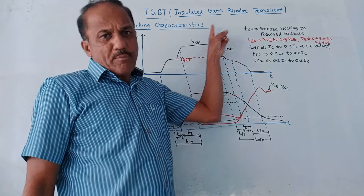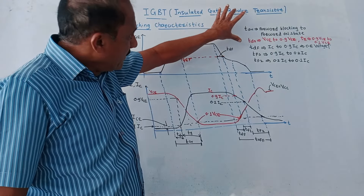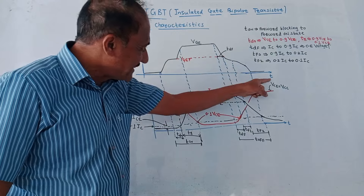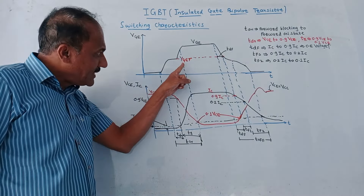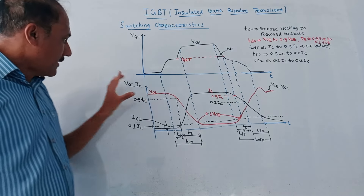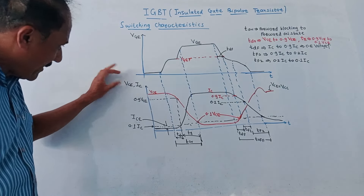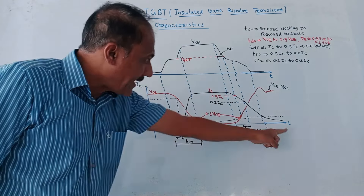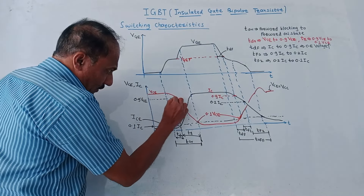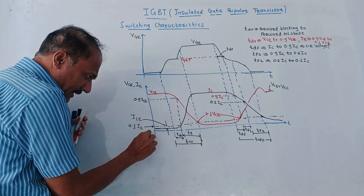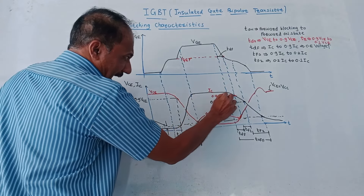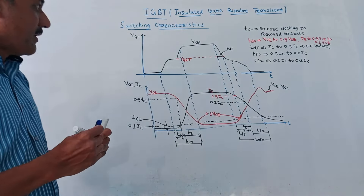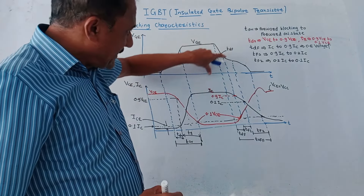Next is the switching characteristics of IGBT. We will study different time periods involved in switching. The first graph shows VGE (gate-to-emitter voltage) versus time, with the threshold level VGET marked. The second graph shows both VCE (collector-emitter voltage, drawn in red) and IC (collector current, drawn in black) versus time.